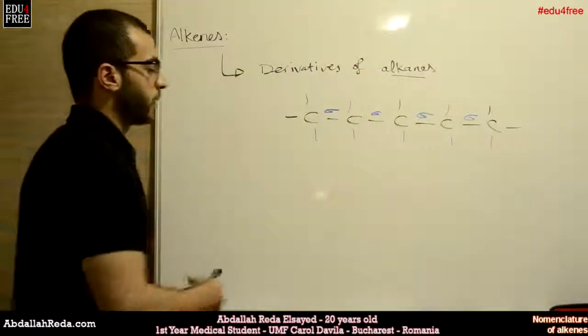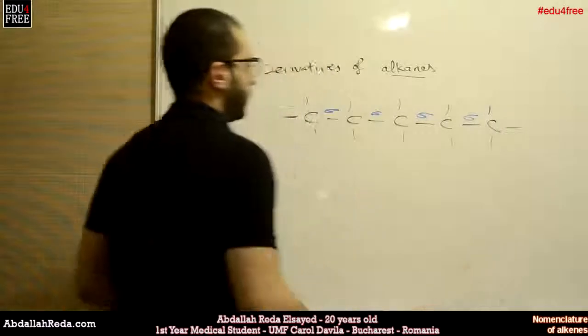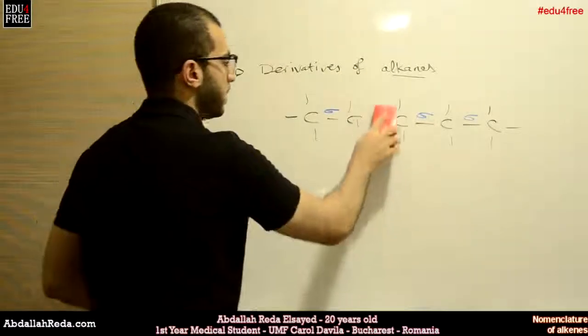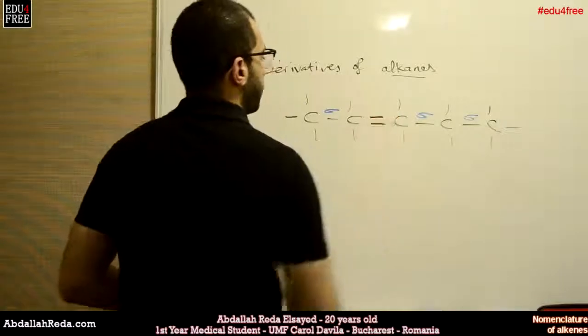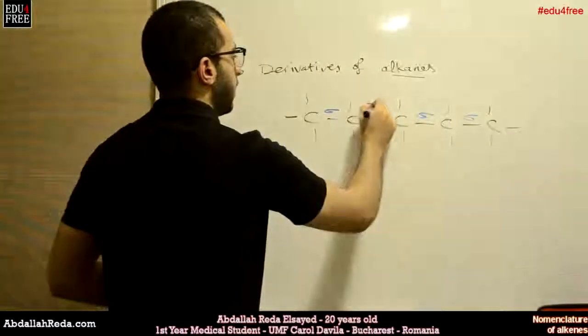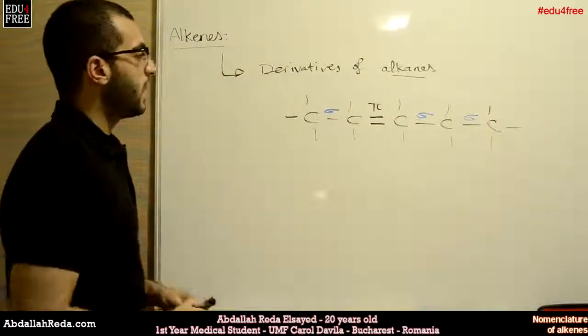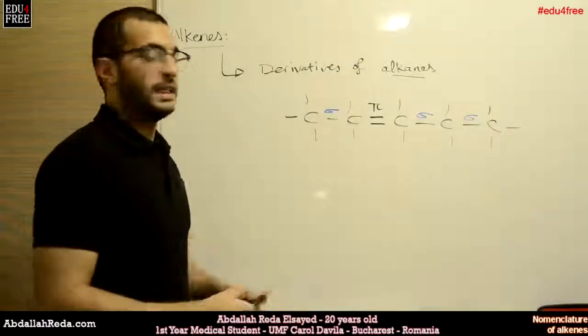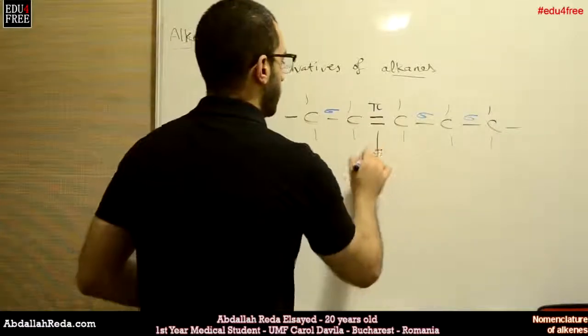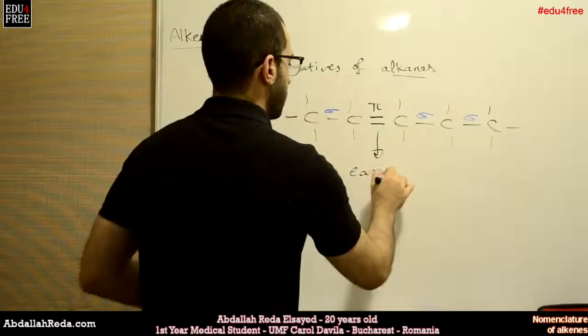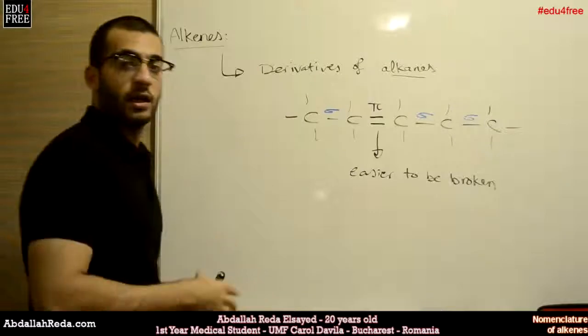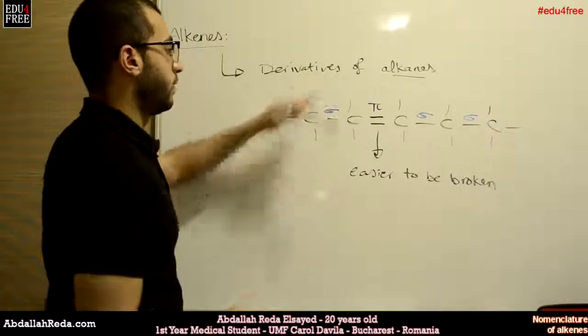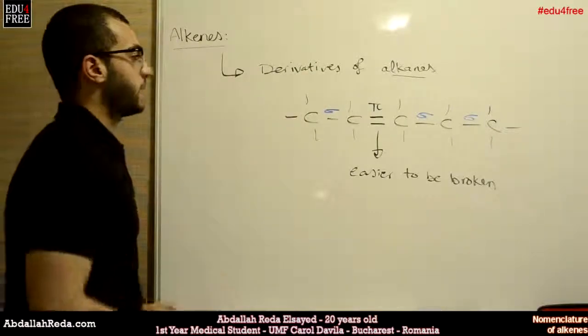On the other hand, for alkenes, we'll find that one of these bonds isn't actually a single bond but instead it's a double bond. This bond is called a pi bond, and it is easier to be broken. So the reactivity of alkenes is actually higher than alkanes, so they carry out more reactions.